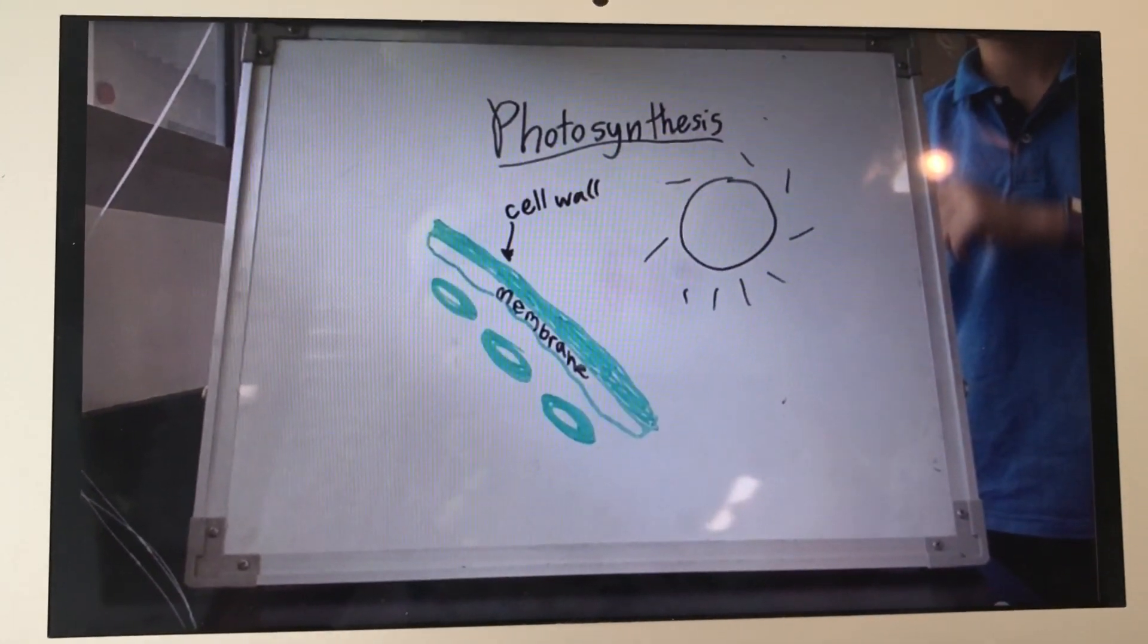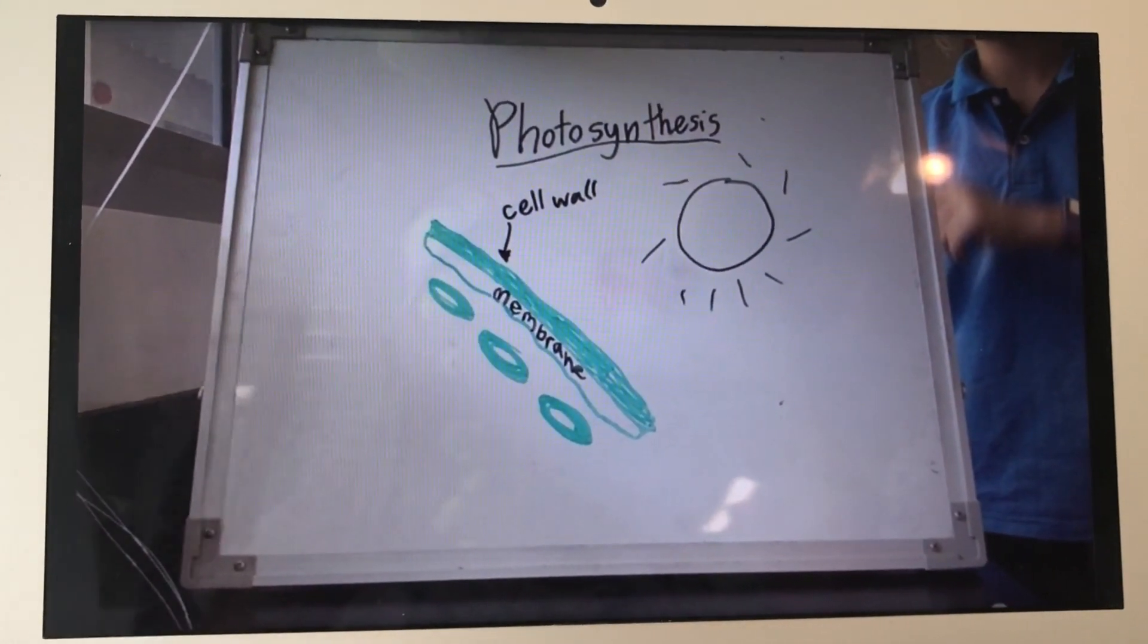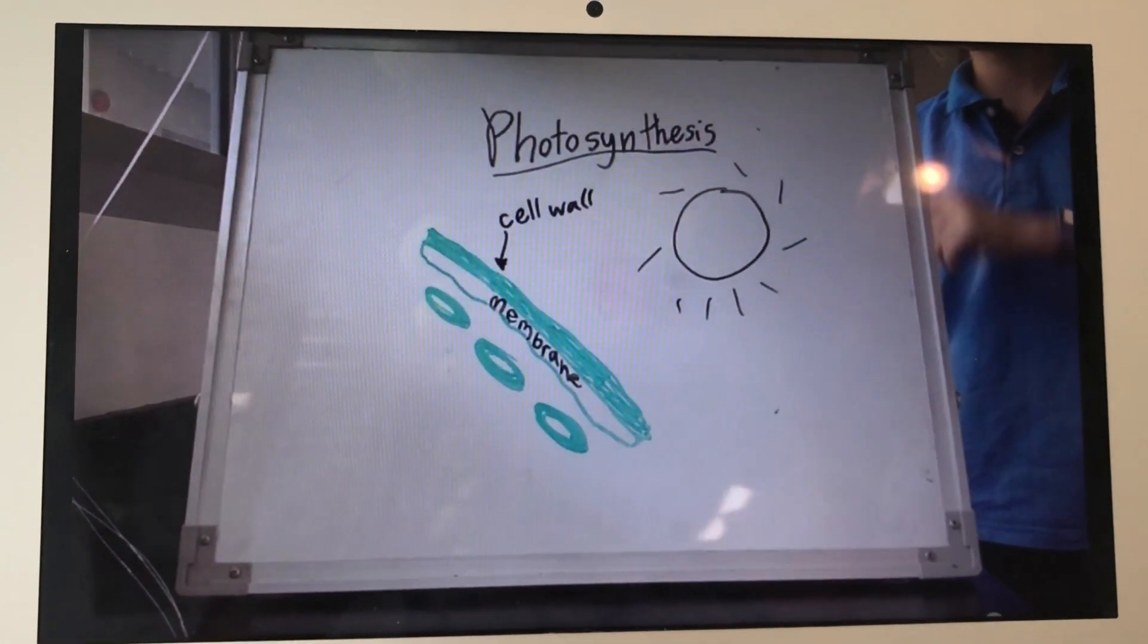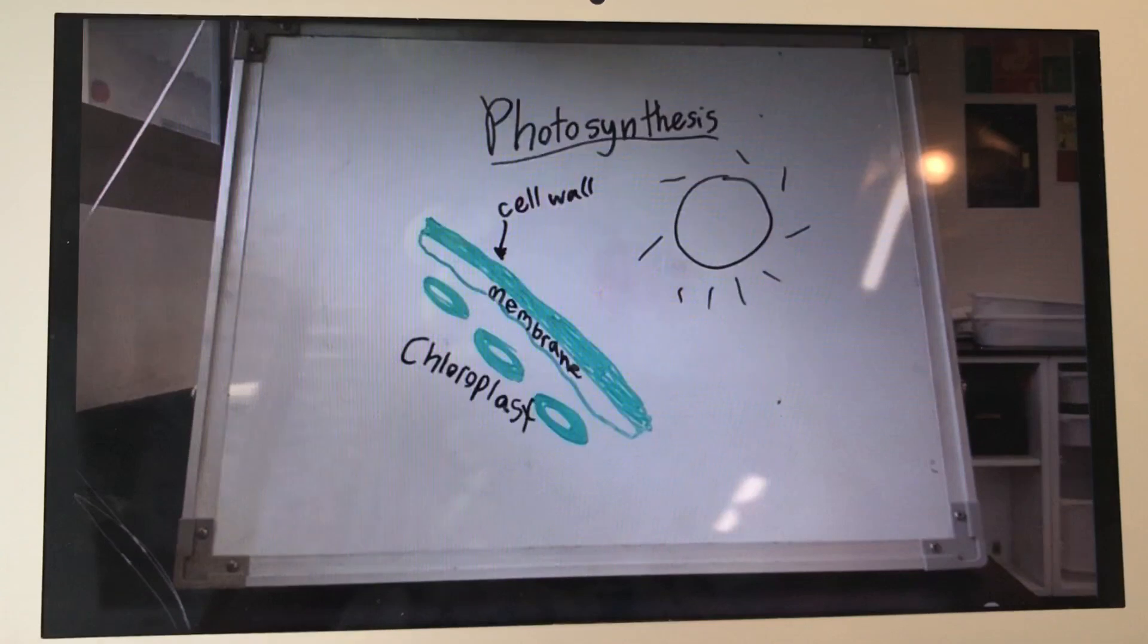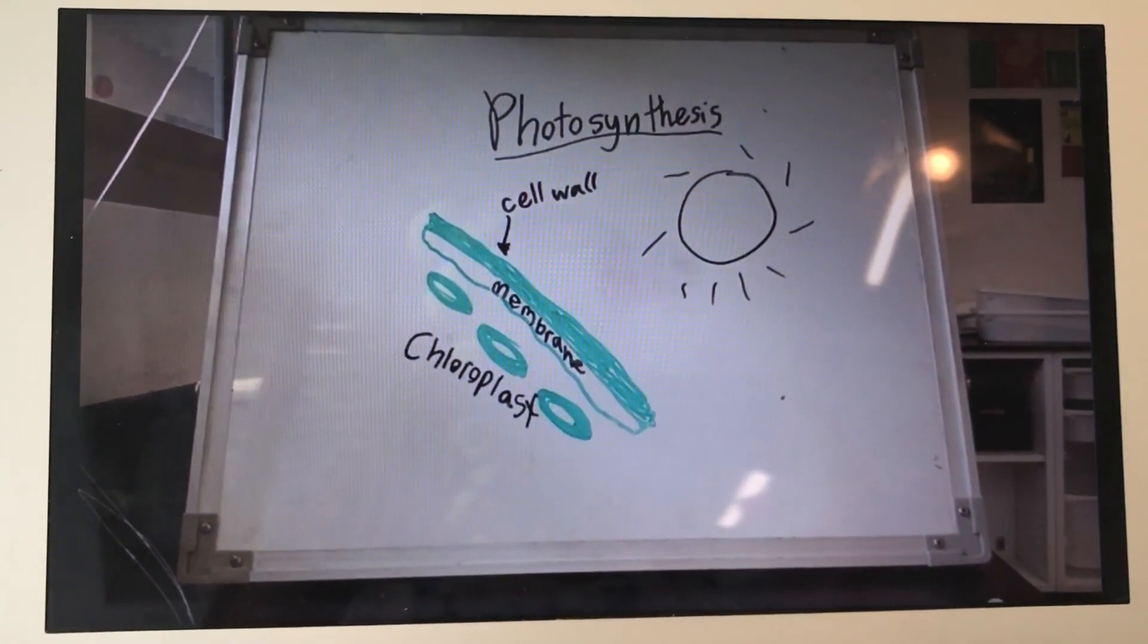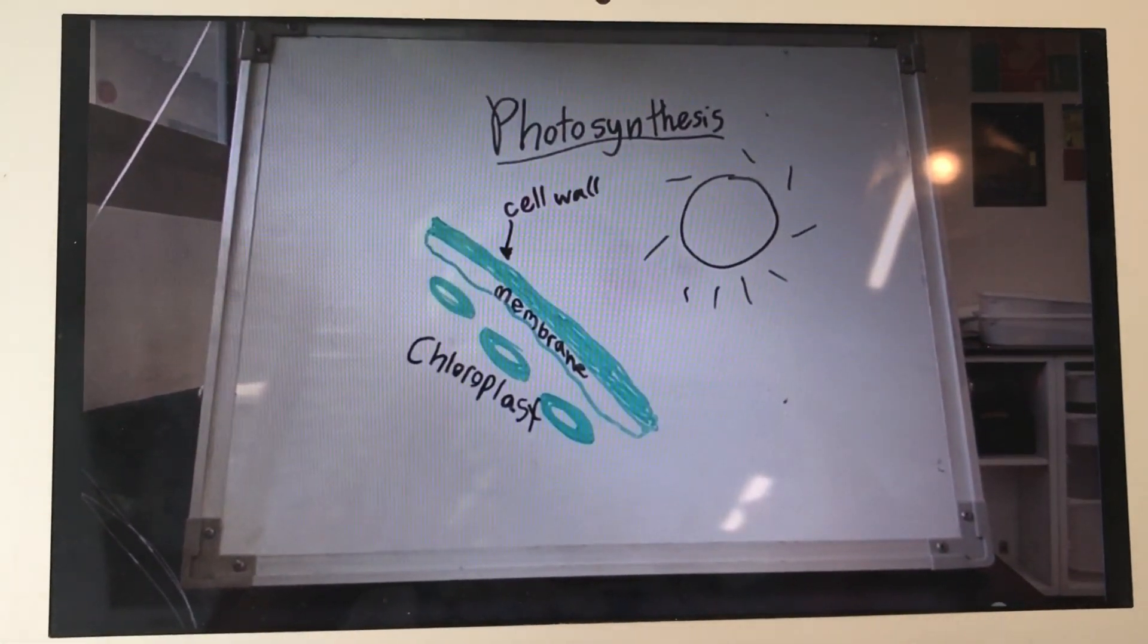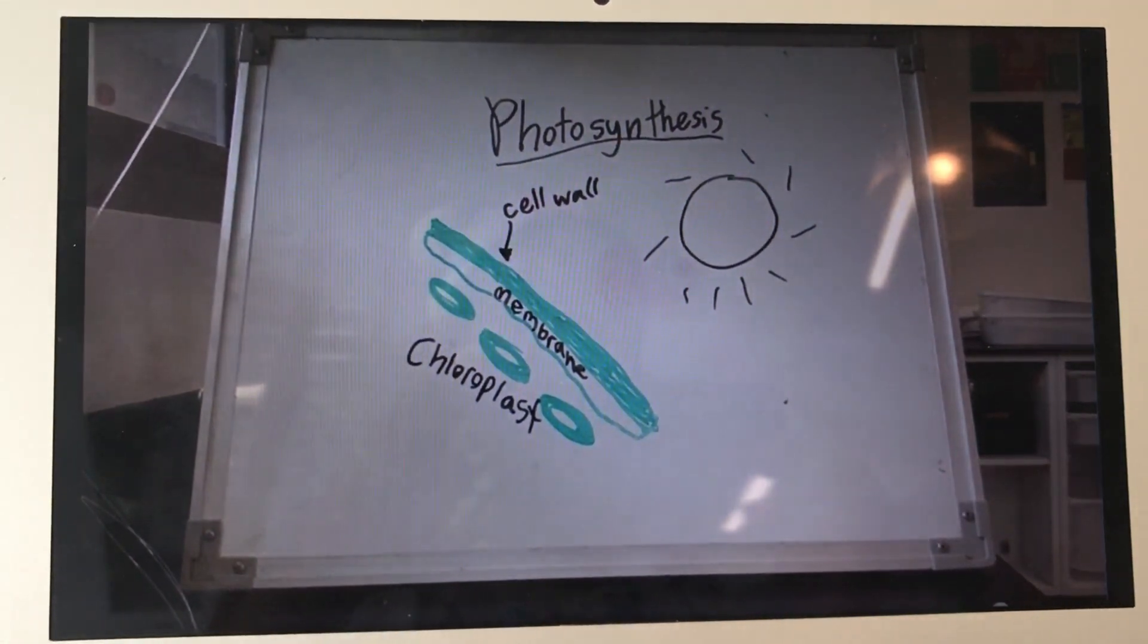On the left is the side of a plant cell. It has a layer of cell wall and a membrane. The three ovals represent chloroplast, and in case you're wondering what it is, I will go through the parts of the cell later in the video.